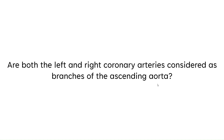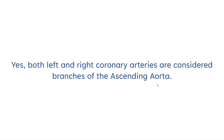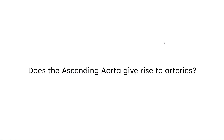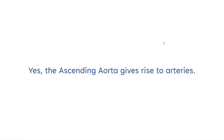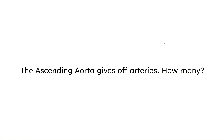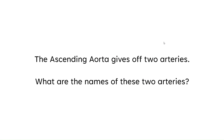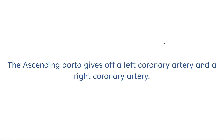Are both the left and right coronary arteries considered as branches of the ascending aorta? Yes, both the left and right coronary arteries are considered branches of the ascending aorta. How many arteries does the ascending aorta give off? The ascending aorta gives off two arteries. What are the names of these two arteries? The ascending aorta gives off the left coronary artery and the right coronary artery.